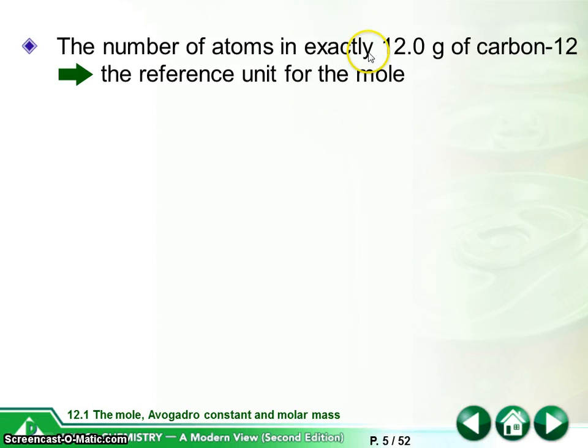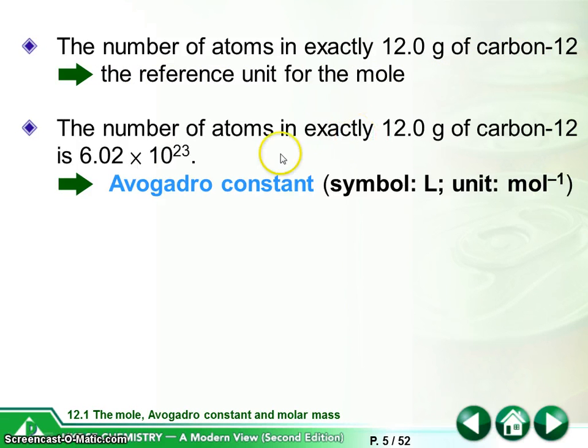So the number of atoms in exactly 12 grams of carbon-12, the reference unit for the mole, is 6.02 times 10 to the power of 23. That is the exact number of particles present in carbon-12 elements. We call it Avogadro constant. That is because it is discovered by Avogadro.